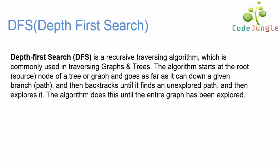This algorithm starts at the root or the source node and goes in a specific path or branch unless and until the branch ends. Once the path or the branch ends, it backtracks to find an unexplored path and then explores it. This method continues till the whole graph or tree has been traversed.